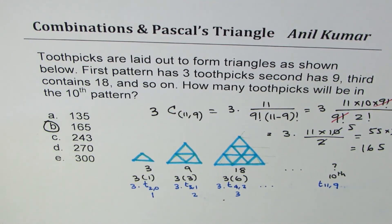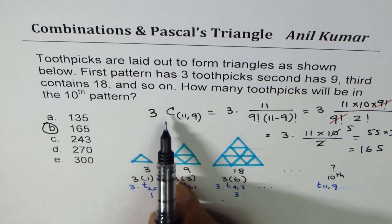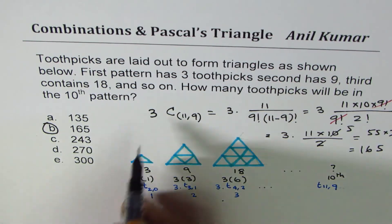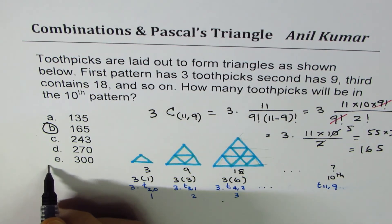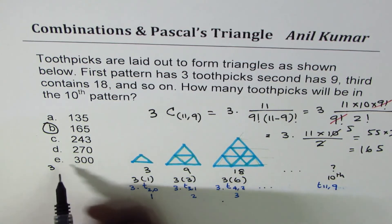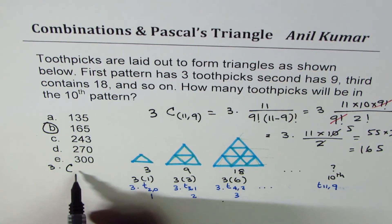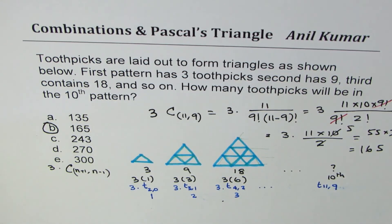So there is a general formula here now, which you could always use—3 times C(n+1, n-1). So that is how you could actually find the solution of such questions. I'm Anil Kumar, if you appreciate that would be great. But feel free to post questions and subscribe to my videos. Thank you and all the best.